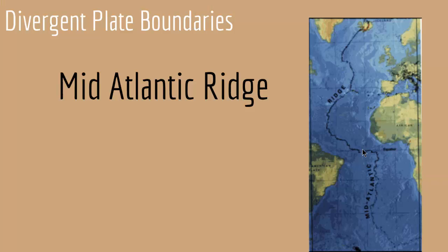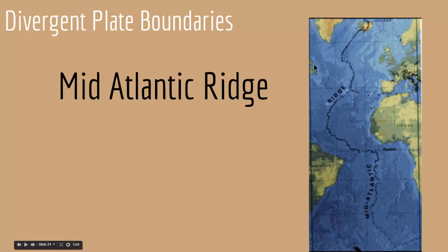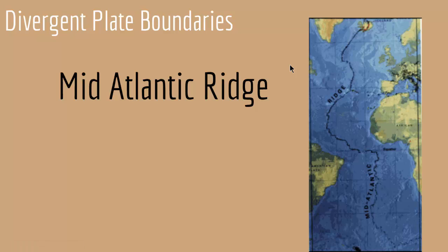An example of a mid-oceanic ridge is the Mid-Atlantic Ridge — a very large ridge in the Atlantic Ocean that divides west and east. You have the United States and South America on one side, and Europe and Africa on the other. This mid-Atlantic ridge separates these two regions, and in that zone there is spreading: Africa is moving away from South America and Europe is moving away from the United States at a rate of about 2.5 centimeters per year.